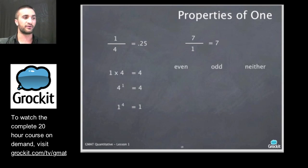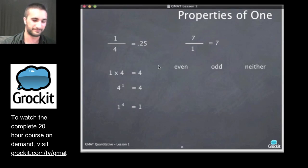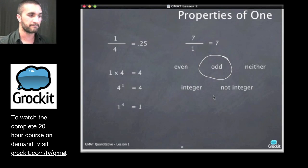How about even, odd, or neither? Properties of one. Is one even, odd, or neither? This one shouldn't be too tough. Odd number. One is an odd number.